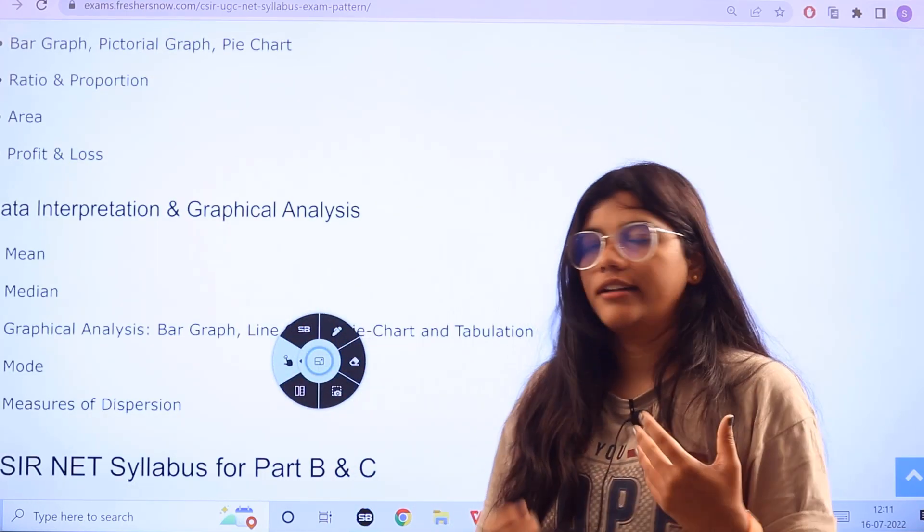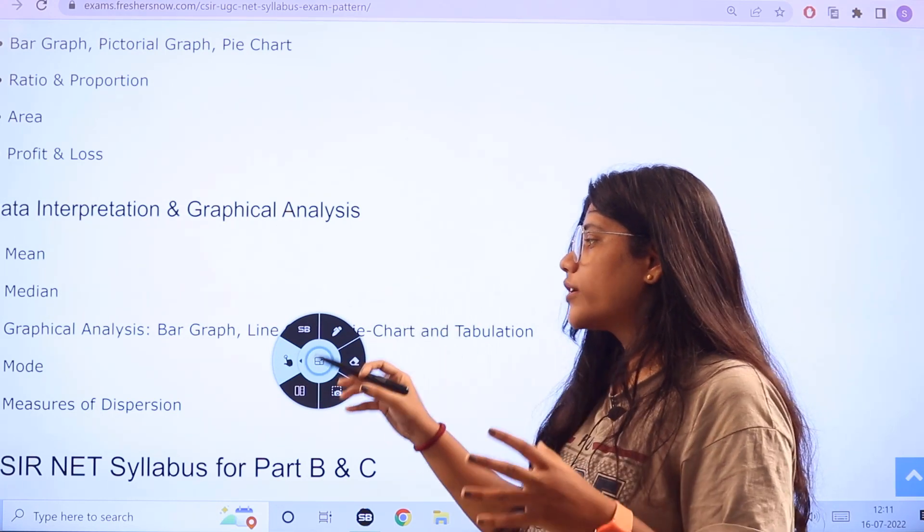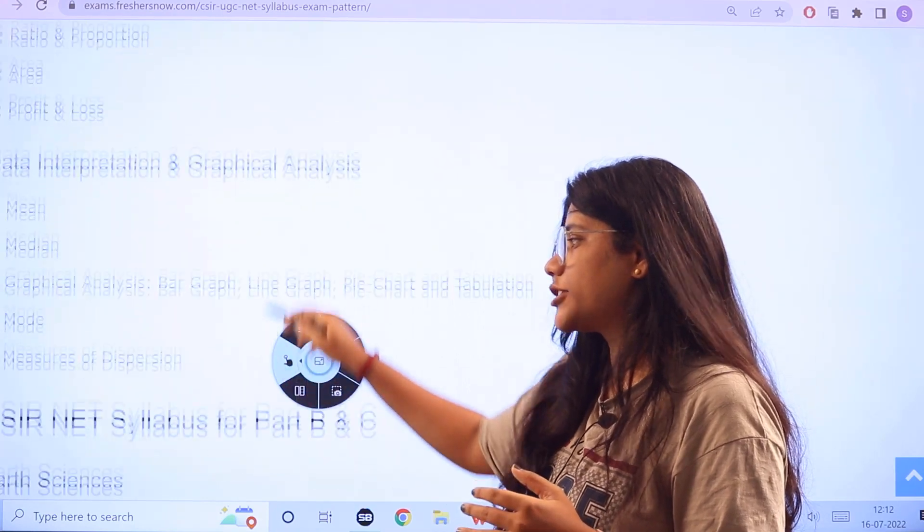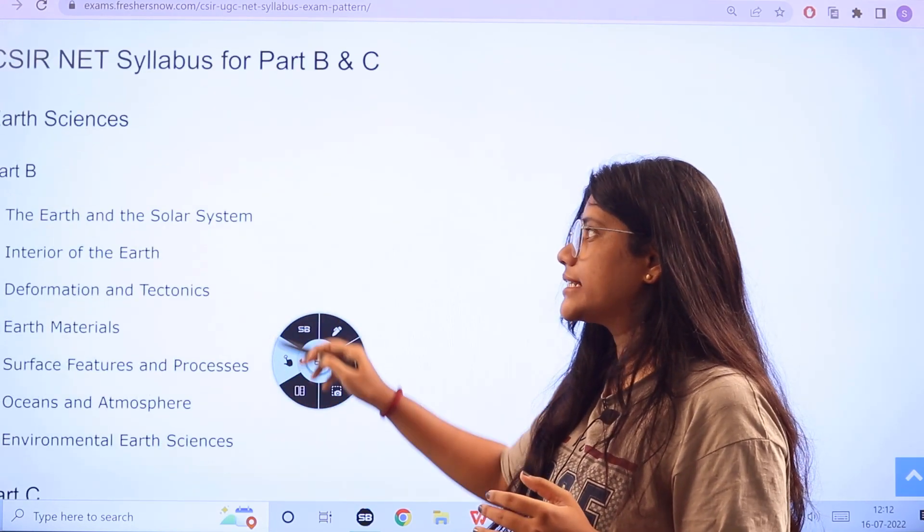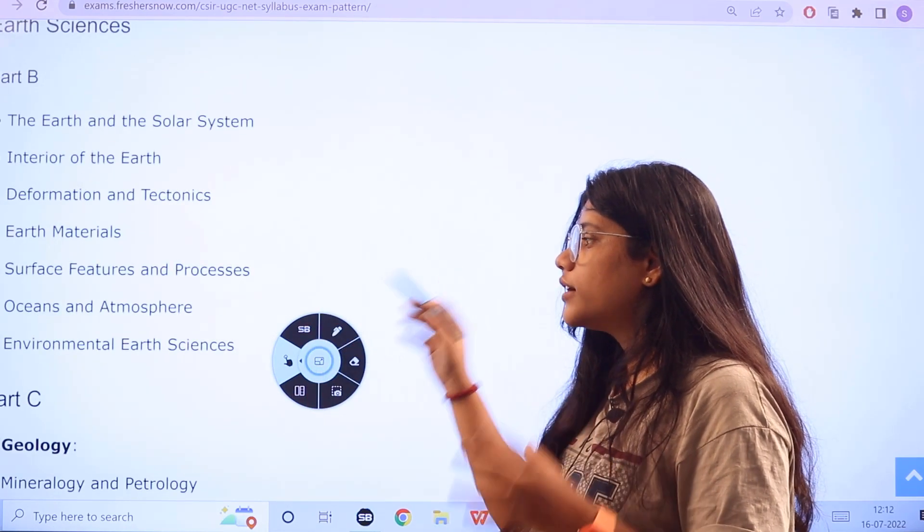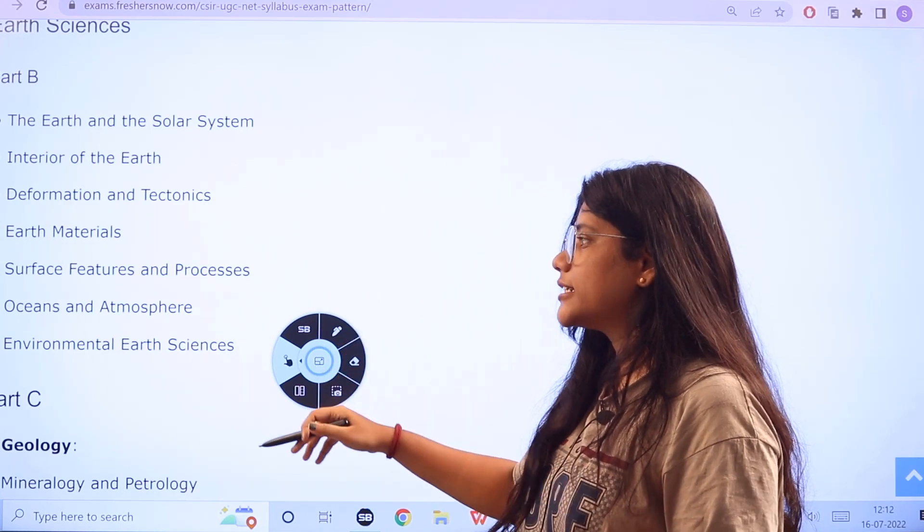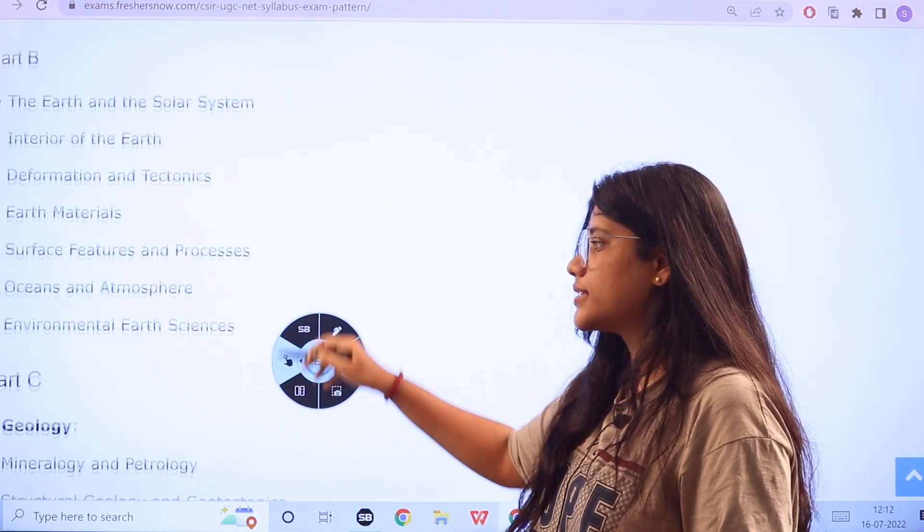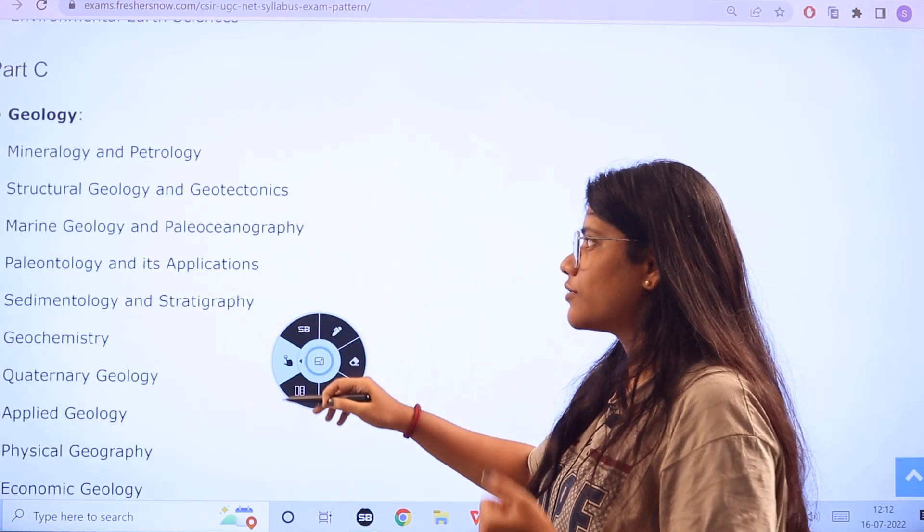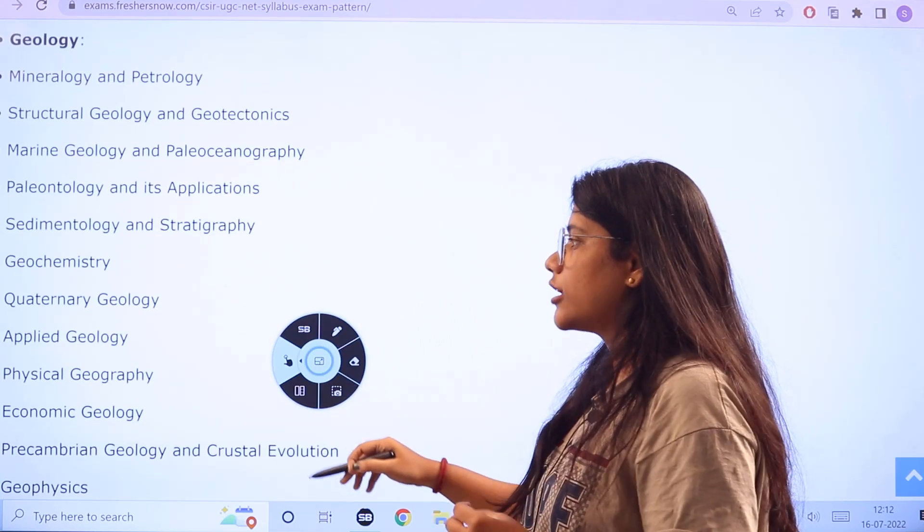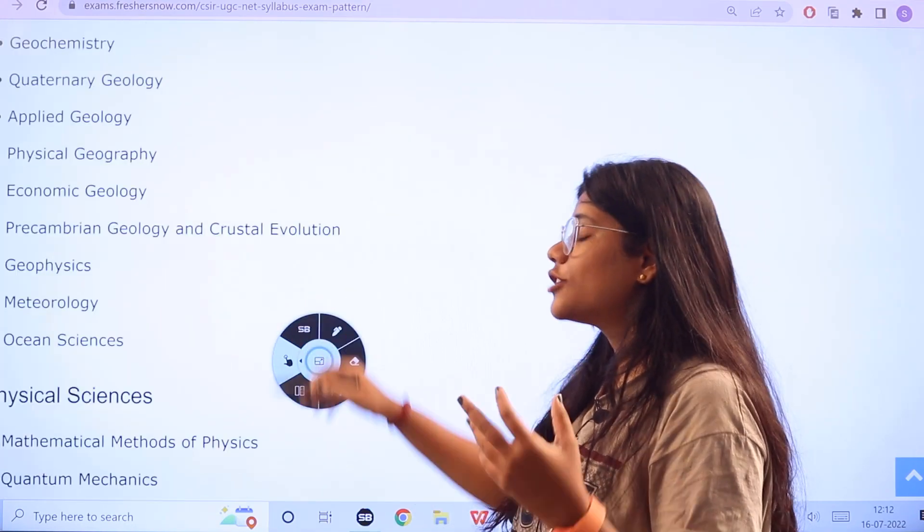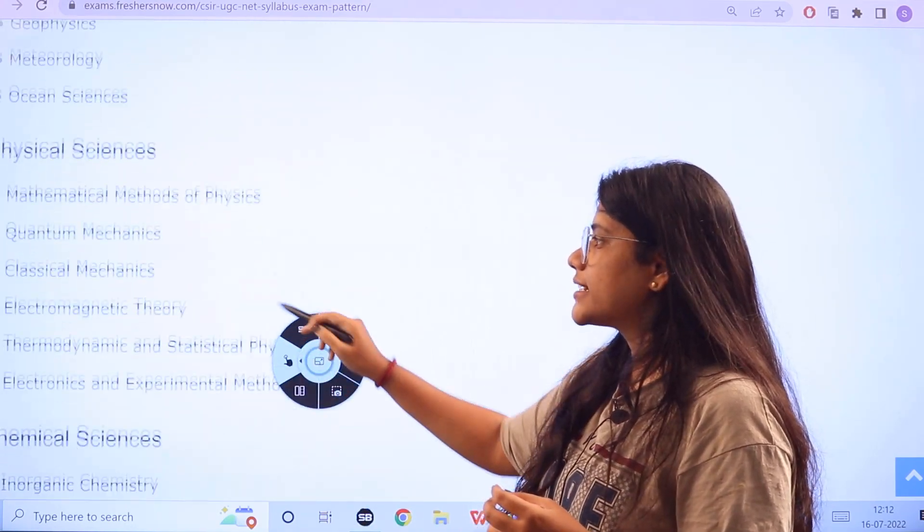Now for data interpretation and also the graphical analysis, mode, graphical analysis of bar graph, line graph, and mean median mode measures of dispersions. Now for part B and C, for earth sciences, you have the Earth and Solar System, Interiors of Earth, Deformation and Tectonics, Earth Materials, Salient Features and Processes, Environmental Earth Sciences. For geology, you have Mineralogy, Structures of Geology and Geotectonics, Sedimentology, Geochemistry, Physical Geography, Economic Geology, Planetary Geology, Geophysics, Meteorology and Ocean Sciences.